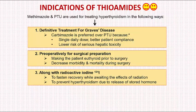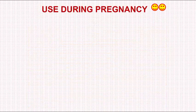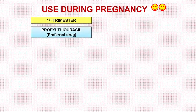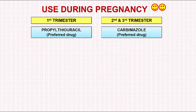Next, we move on to the usage of these drugs during pregnancy. Previously, we used to learn that propylthiouracil has higher plasma protein binding, so it crosses the placenta less and less of it reaches the fetus, making it the preferred drug during pregnancy. But nowadays, the concept has changed. Propylthiouracil is preferred in the first trimester of pregnancy, whereas carbamazole is preferred in the second and third trimesters.